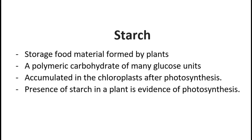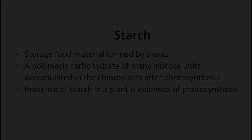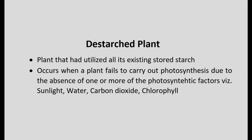If a plant is stripped of any one or all of the vital factors necessary for it to carry on photosynthesis, then photosynthesis immediately ceases to occur in that plant. As a result, the plant starts utilizing its existing reserve food that's been stored in the form of starch. Eventually, the plant would have used up all its remaining stored starch and become what is known as a de-starched plant.